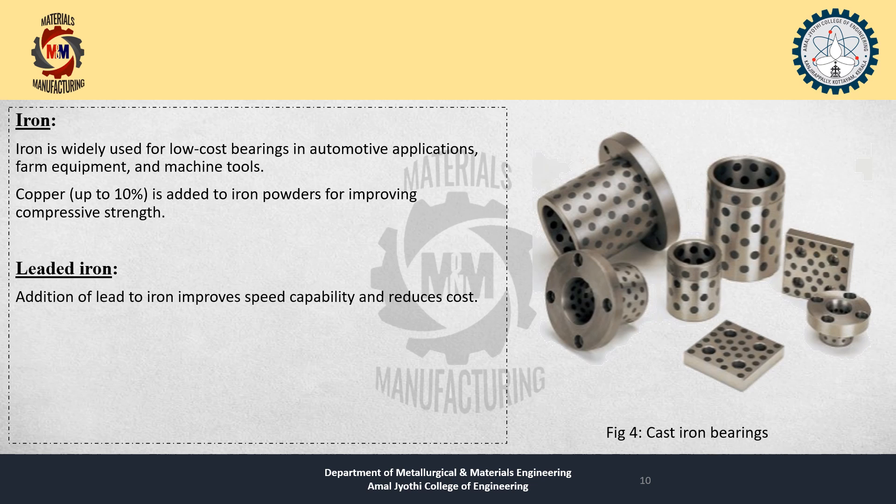The next mainly used material for manufacturing self-lubricating bearings is iron. Iron is commonly used for manufacturing low-cost bearings in automotive applications, for making farm equipment and machine tools. Copper up to 10% is added to iron powder for improving compressive strength. Figure 4 shows the image of cast iron bearings.